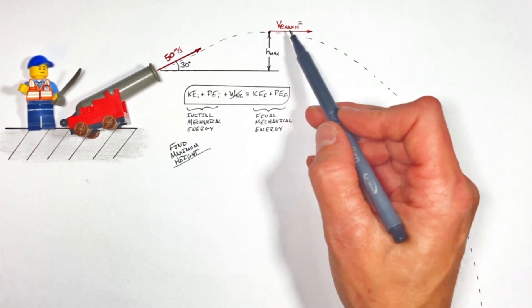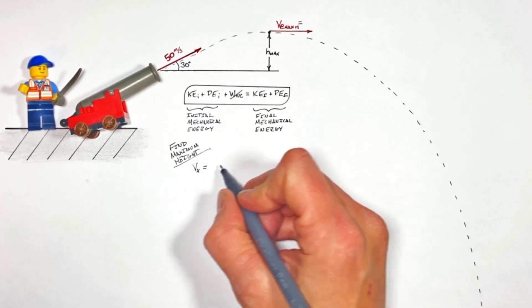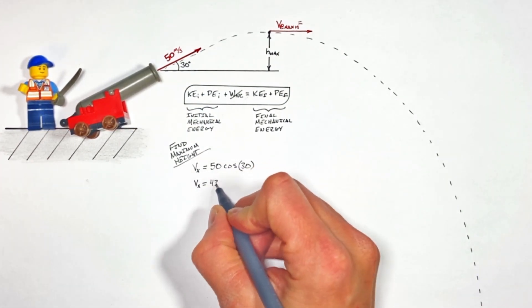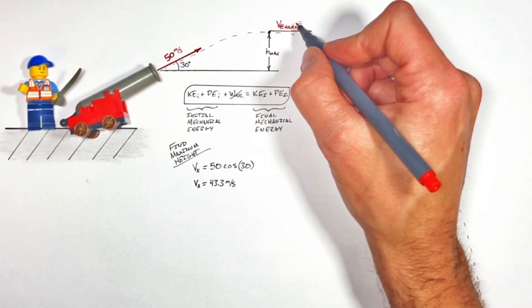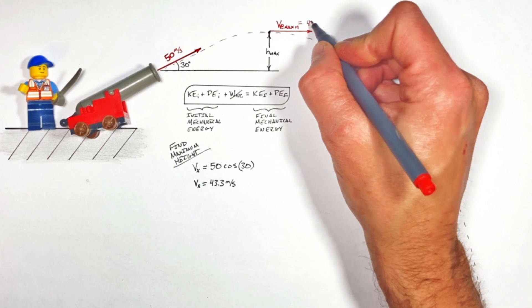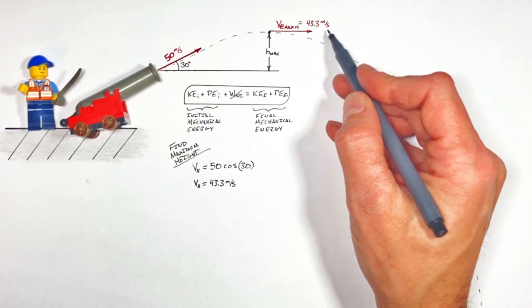To solve for the velocity at the maximum height, we need to remember that projectile motion is nothing other than constant velocity in the x-axis and freefall in the y-axis. So finding the horizontal component of this 50 meters per second, we find the velocity at the maximum height is 43.3 meters per second.